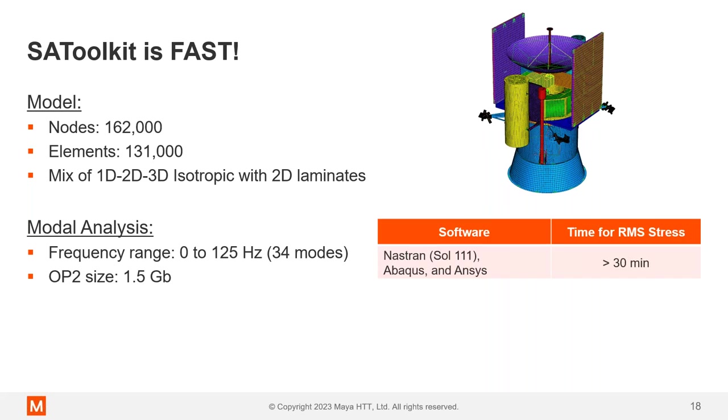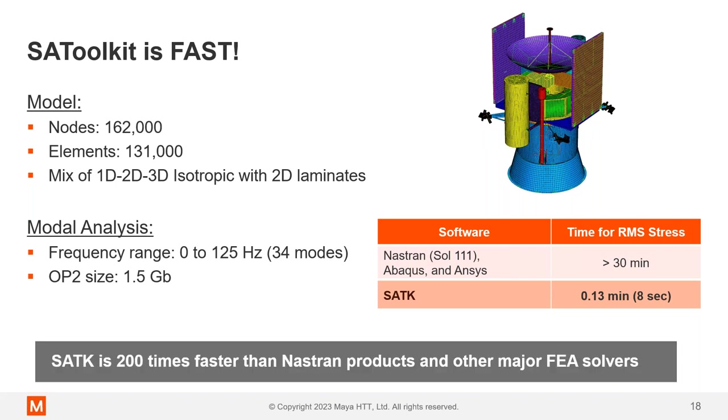So when we run this in something like Nastran Solution 111, Abaqus, or the ANSYS random vibe processors, it's going to take 30 minutes or more to get the RMS stresses. If we run this same model through Structural Analysis Toolkit, we can get those results in about 8 seconds. That's the level of speed that we're talking about here. In this instance, 200 times faster than Nastran products and other major FEA solvers. It's very fast.